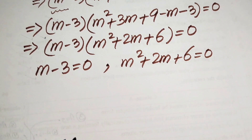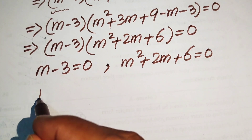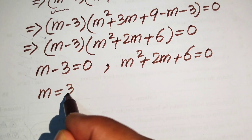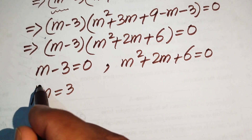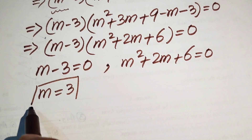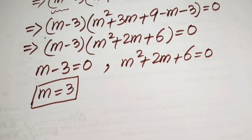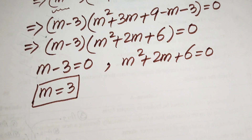From the first case we easily get the value of m equals 3. This is our first real solution obtained from the equation. We now need to find the other two solutions.